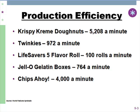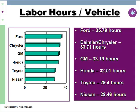Even looking at the auto industry — Ford, GM, Honda — you can figure out how many hours it takes them to produce a car. This is a standard measurement across the industry. And it's interesting to see how low Nissan and Toyota are in terms of how many hours it takes them to produce a car.